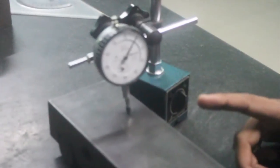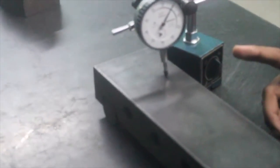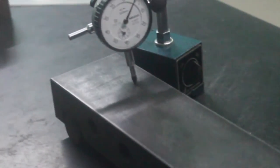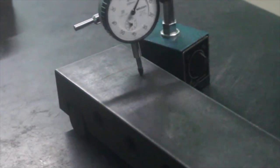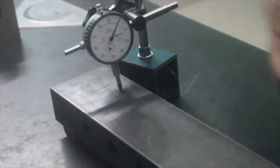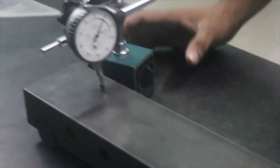After setting it to zero, now we are moving it to the first point. At the first point, we have a value that is equal to negative 0.01. This is negative because the needle moved in the anticlockwise direction.